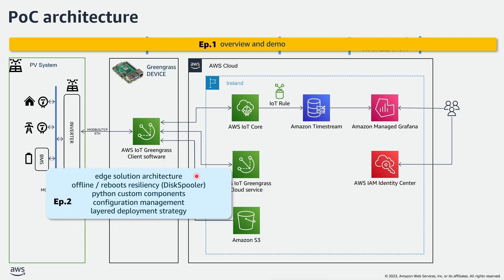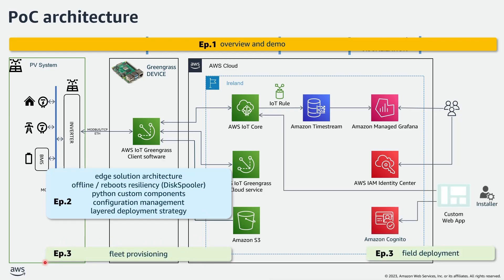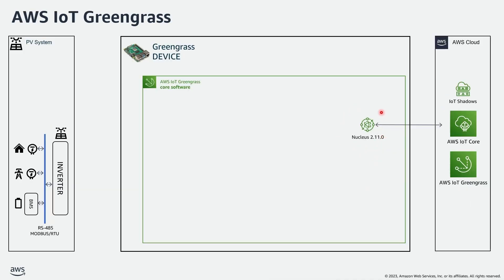In this second episode we will deep dive into the AWS IoT Greengrass device, looking at the architecture, how I made the solution resilient to the lack of upstream connectivity and to system reboots using the disk spooler component. I will show you the Python custom components I developed and the strategies I adopted for configuration management and layered deployment of software components. In the third and last episode we will deep dive into fleet provisioning and field deployment assisted by a custom management web app.